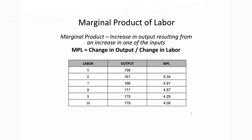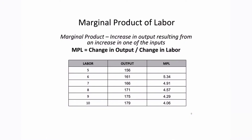When considering the production decisions of firms, we also have to think about the marginal product of labor. The marginal product of labor tells us by how much production increases as we increase our labor — it is the change in output divided by the change in labor. We know our machines stay constant at one, but our labor is increasing, so we want to know by how much output is increasing as our workers increase.